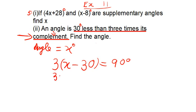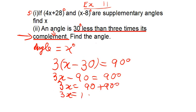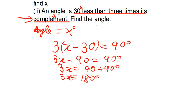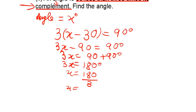So 3x minus 3 into 30 is 90 is equal to 90 degrees. So 3x is equal to 90 plus 90 degrees, so we will have 3x is equal to 180 degrees. And you can write here that x is equal to 180 upon 3, so x is equal to 60 degrees, and this is our answer. Our angle is equal to 60 degrees.